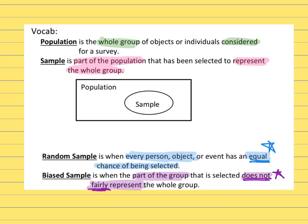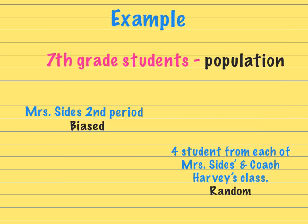Let's look at an example that's easy to understand for seventh graders. If I want to ask a question and get seventh grade students' opinions, they would be my population. One way I could take a survey is to just ask every kid in my second period class, and that would be biased because any students who aren't in my class don't have a chance, and students in a different period also do not have a chance. So this sample would be biased.